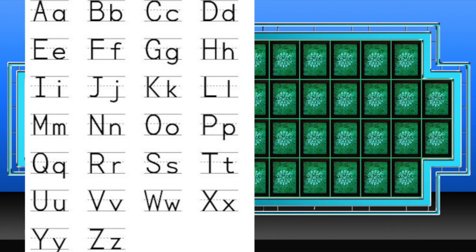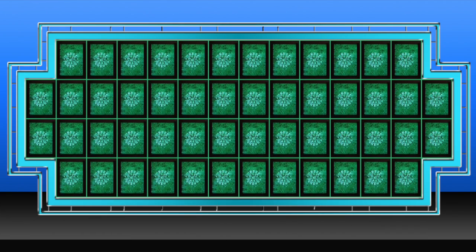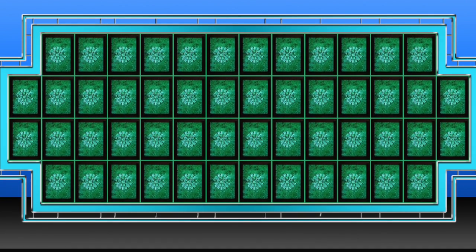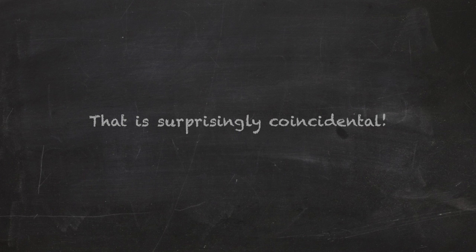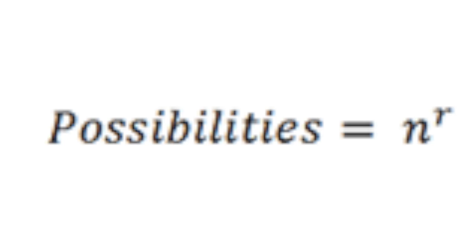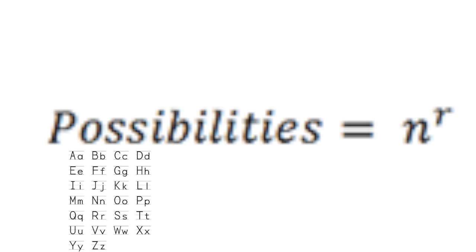This applies to Wheel of Fortune. There are 26 letters in the English alphabet and each board has an average of 26 spaces. That is surprisingly coincidental. Anyways, the formula for this is displayed here, where n is the number of possible letters and r is the total slots.